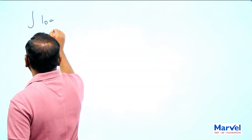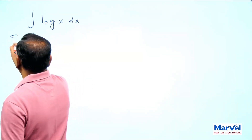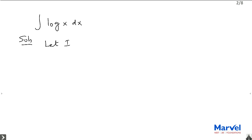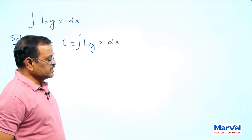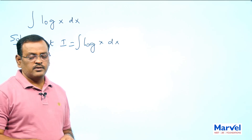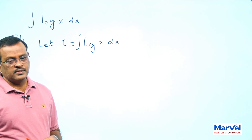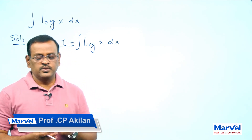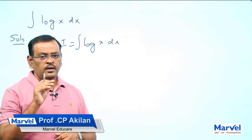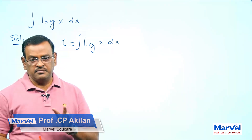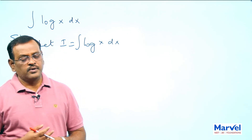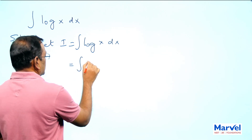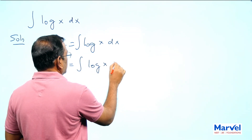Now, another example for integration by parts: integral of log x dx. Solution: let I equal to integral of log x dx. Here the integrand contains only one function, but we still have to apply integration by parts. The reason is this function is not directly integrable. We can apply integration by parts under two situations: one is when it has a product of two functions, and another is when it is a single function which is not directly integrable.